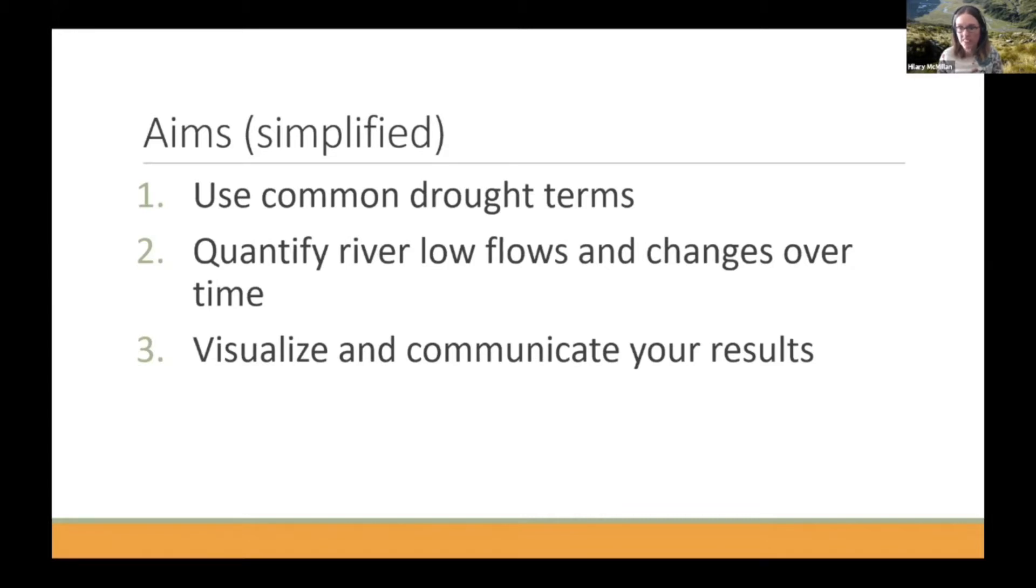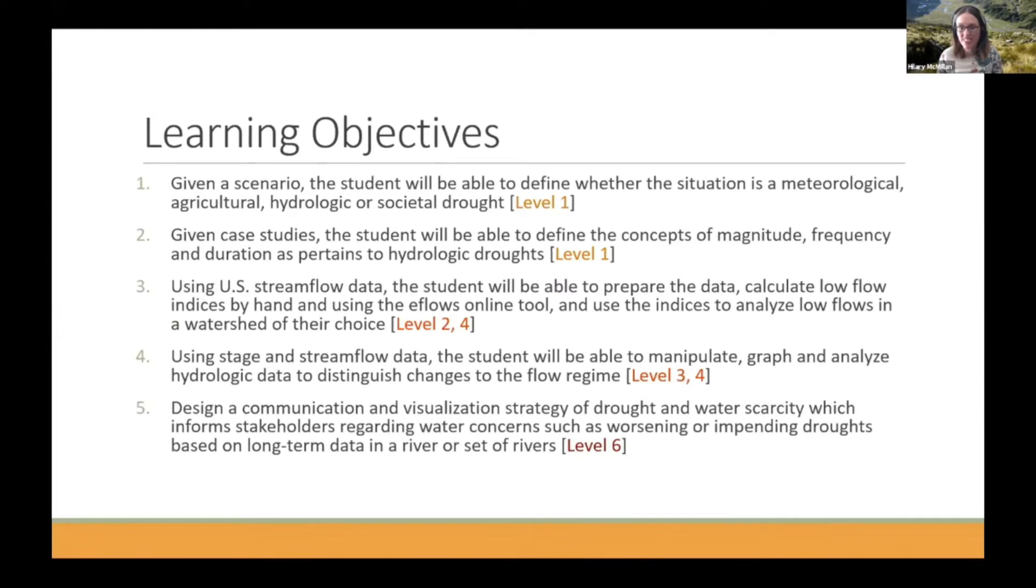So we turn these simple aims into the learning objectives that we have for the module. So they're kind of divided into three parts. So the first two are more simple ones about defining the common drought terms. So we want the students to be able to say whether a situation is a meteorological drought, agricultural, hydrological, societal drought. And we want them to be able to define the concepts of magnitude, frequency, and duration as we use them to define droughts.